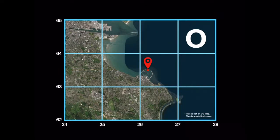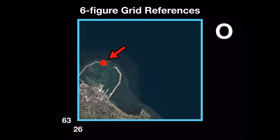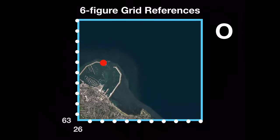However, you are often required to give more precise coordinates for a particular point on a map — for example, a school, a post office, a bridge or a lighthouse, as in this example. This requires a six-figure grid reference to be used. Each grid square can be divided equally into ten smaller parts, as if they are decimals.